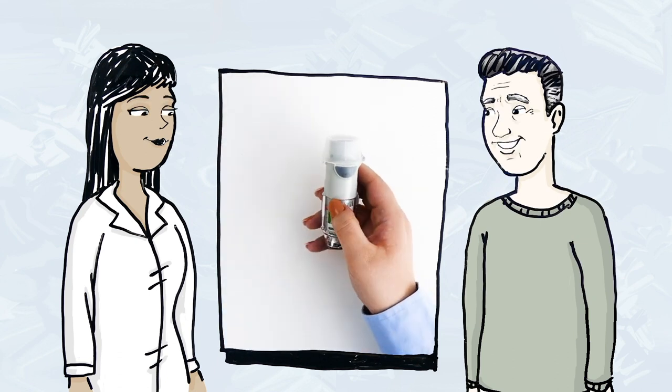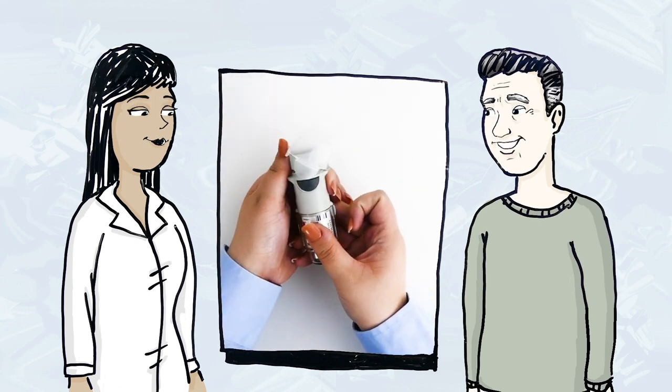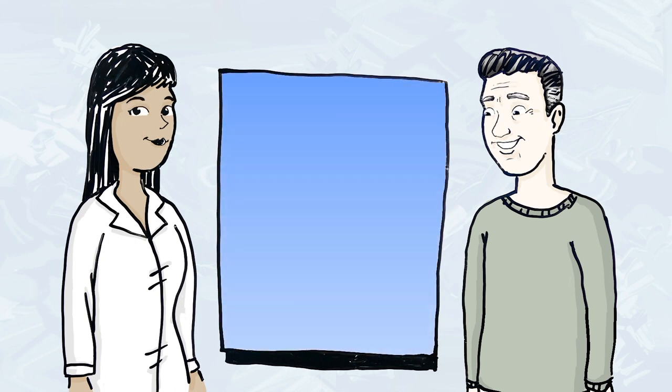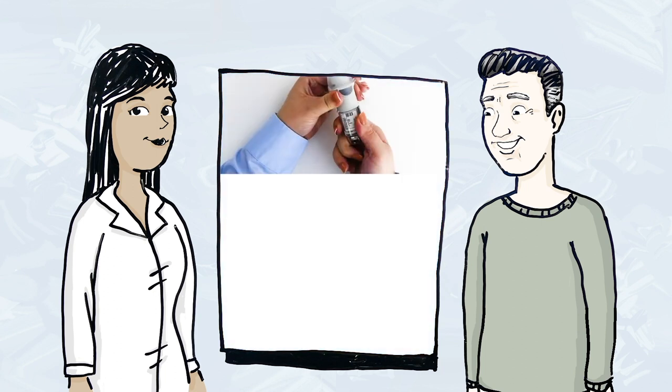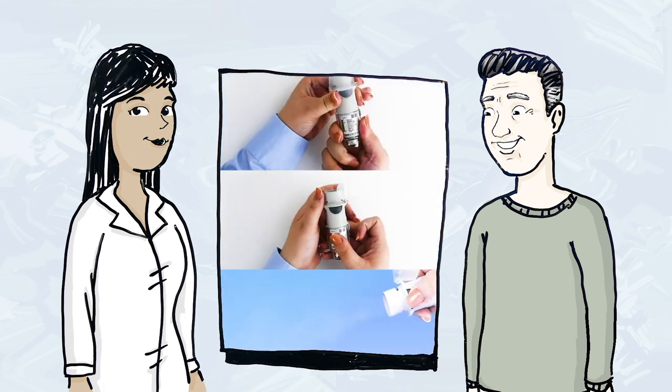we push up on the circular opening tab until the cap snaps fully open. With the inhaler pointed toward the ground, we press the dose release button. We then repeat, turn, open, press with the inhaler pointed toward the ground until there are four mists released from the inhaler.